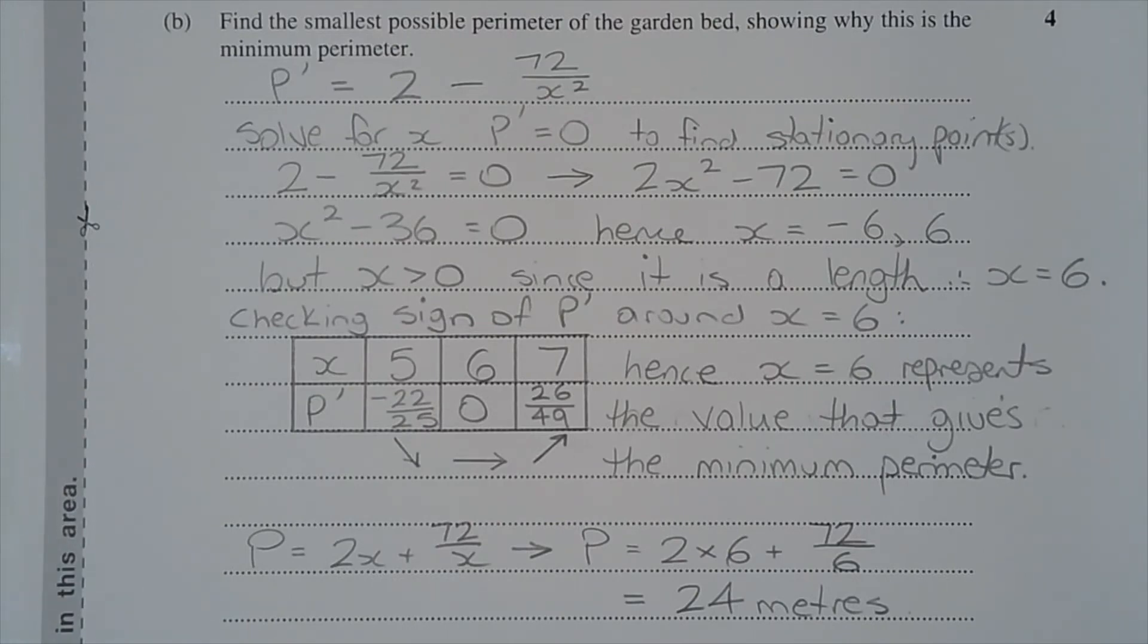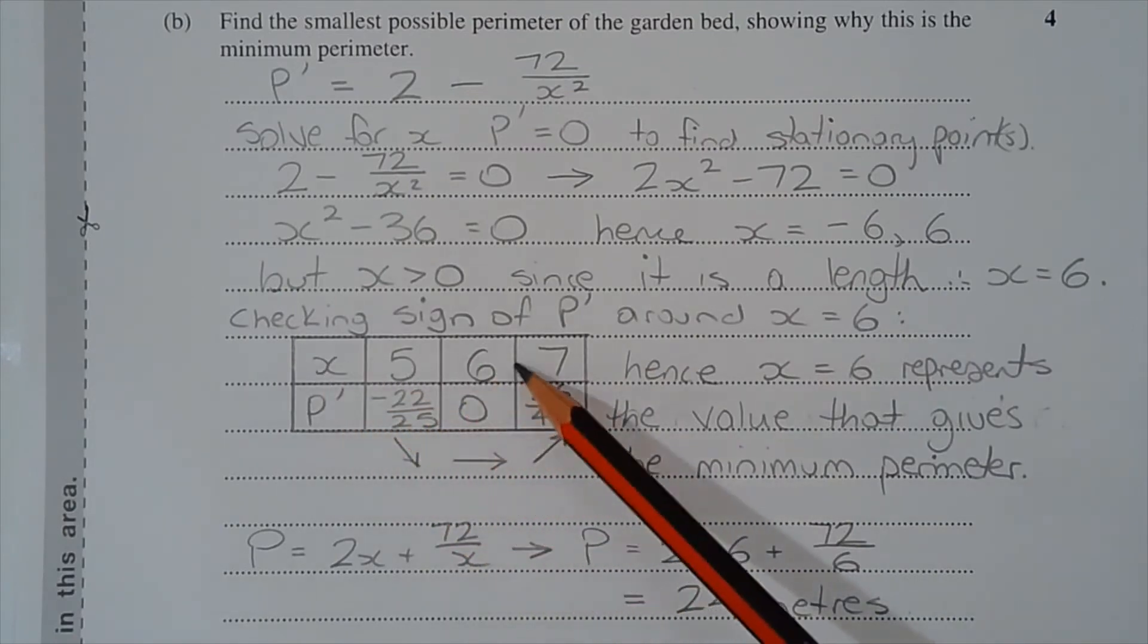But we need to check that x equals 6 gives the minimum perimeter, and we can do that by checking the sign of p dash around x equals 6.